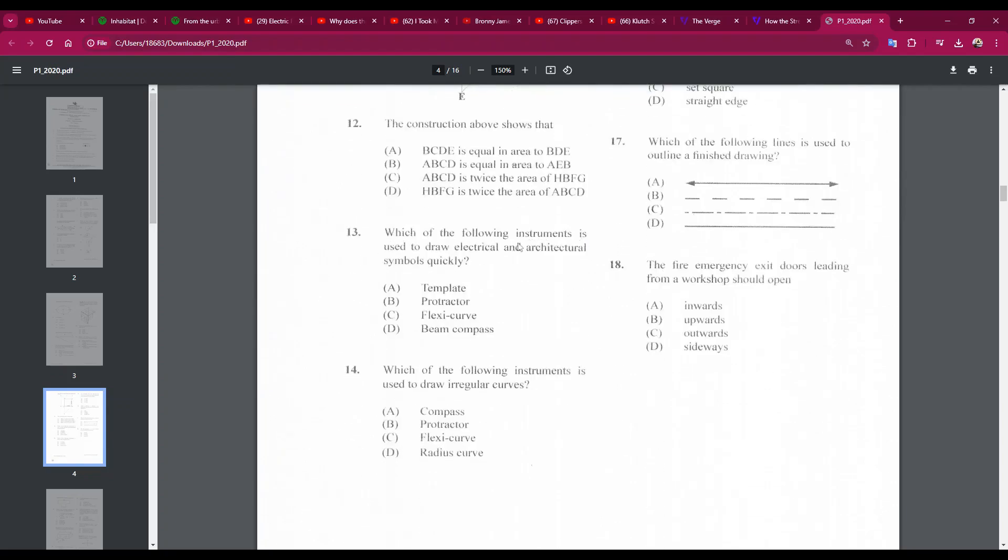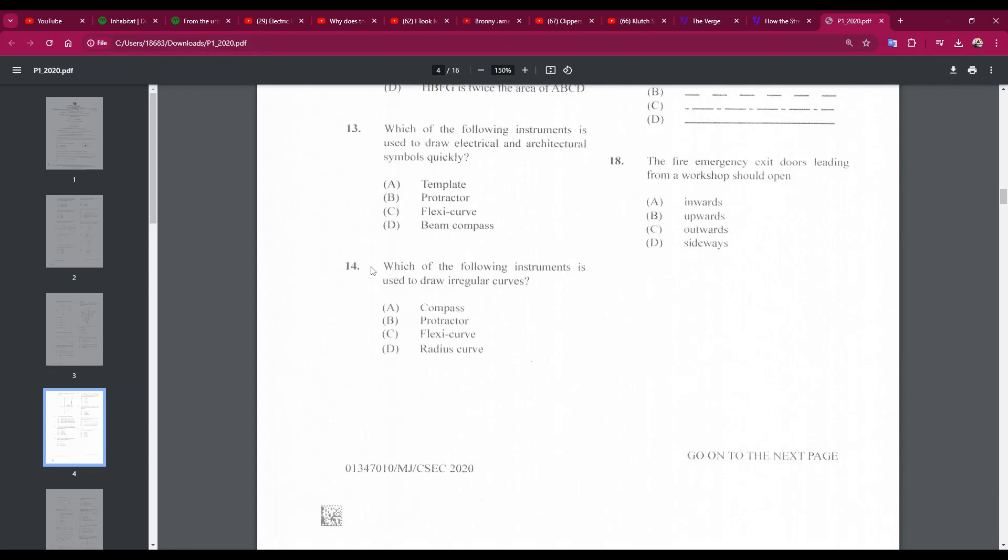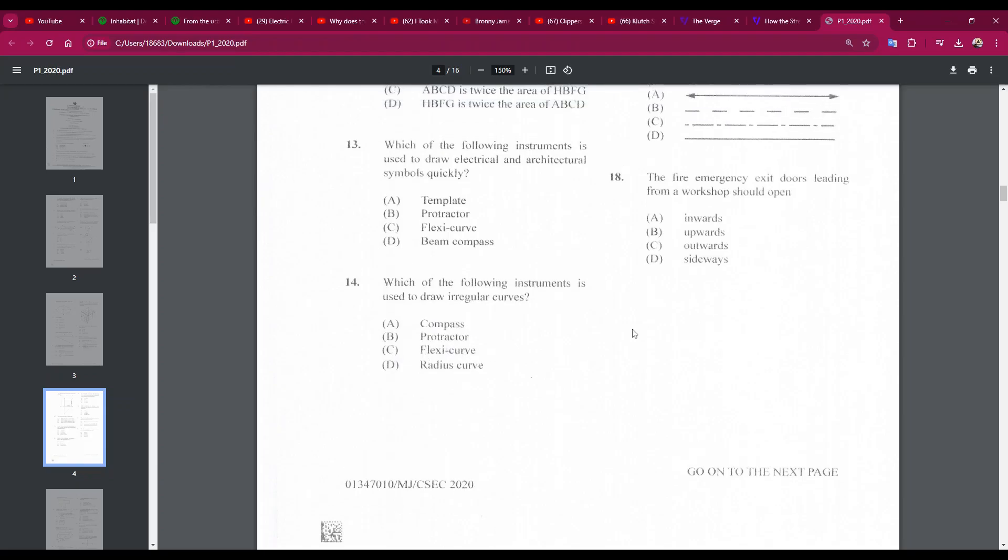Question thirteen: which of the following instruments is used to draw electrical and architectural symbols quickly? The answer would be A, a template. Number 14: which of the following instruments is used to draw irregular curves? The answer would be C, a flexi curve.